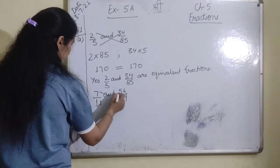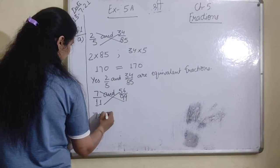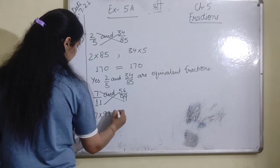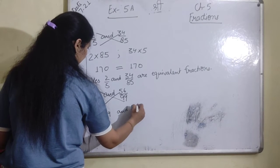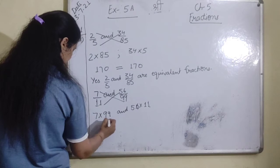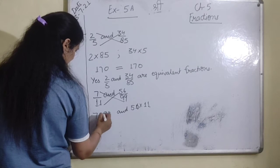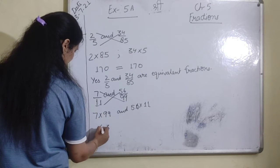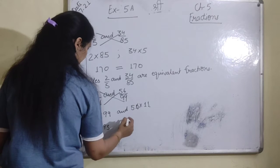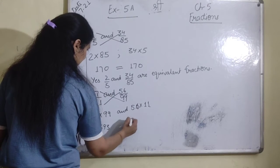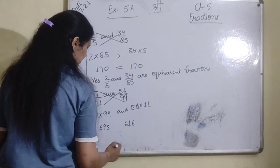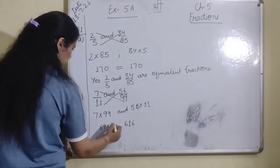Cross multiply again. 7 times 99 and 56 times 11. 7 times 99 is 693, and 56 times 11 is 616. So whether these are equivalent? No.